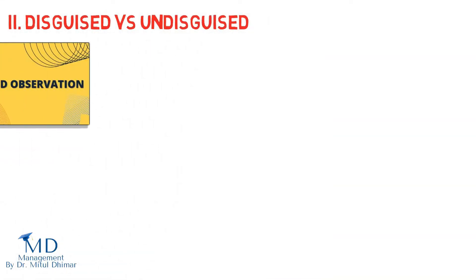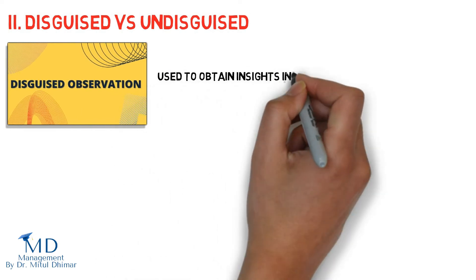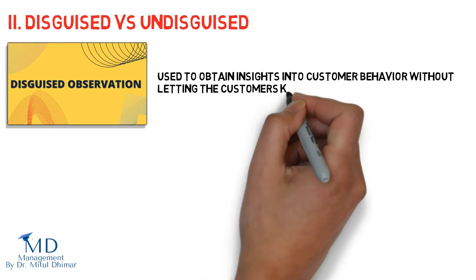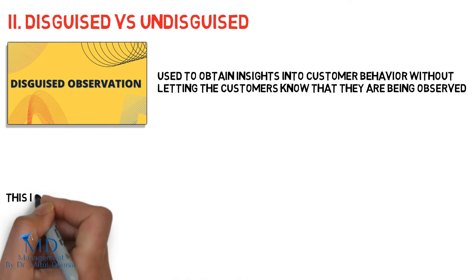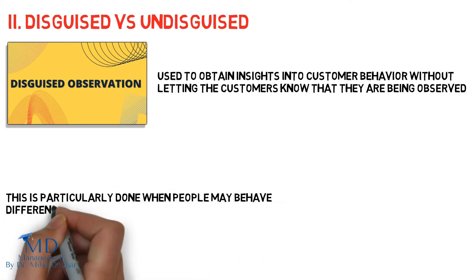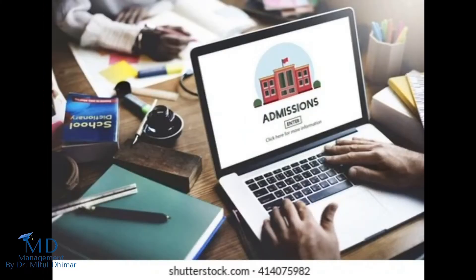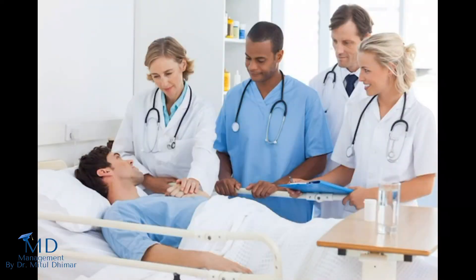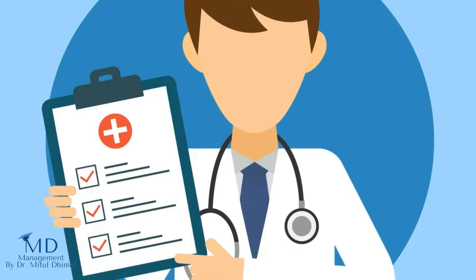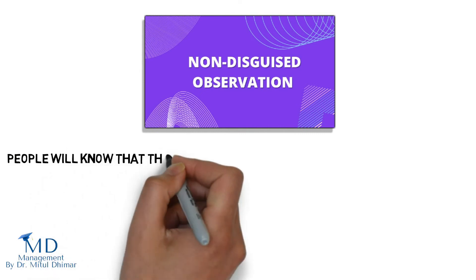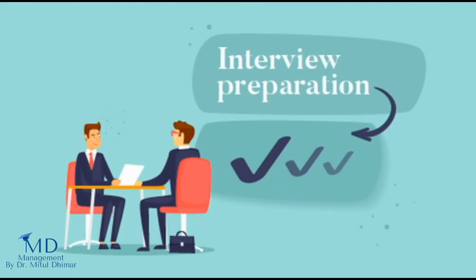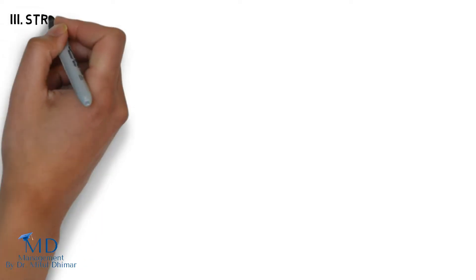Second: disguised versus undisguised. Disguised observation is used to obtain insights into customer behavior without letting customers know they are being observed, particularly when people may behave differently if aware of observation. For example, researchers seeking admission to mental hospitals to observe patient-staff interactions and patient diagnosing and releasing procedures. In non-disguised observation, people know they are being observed for research — for example, respondents are informed in advance that they are under CCTV surveillance and being observed by a researcher in a mall.